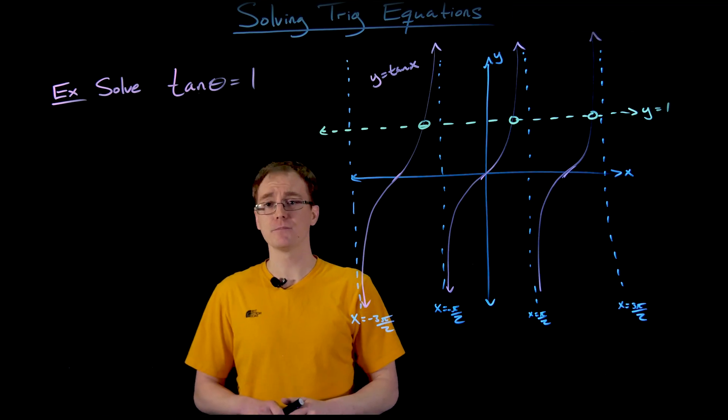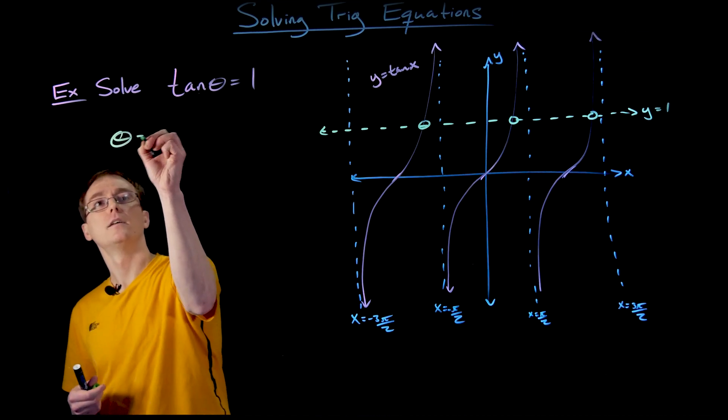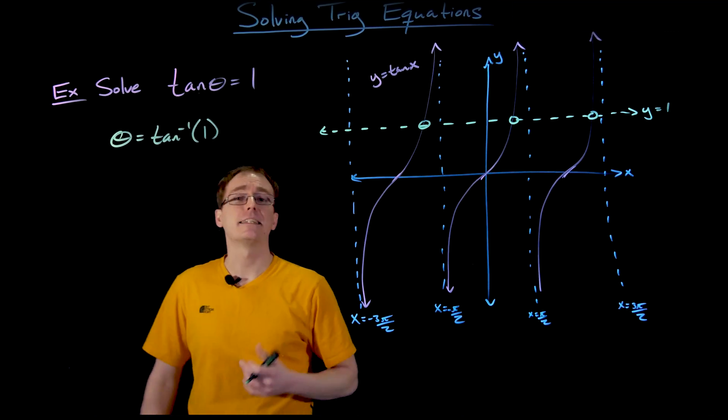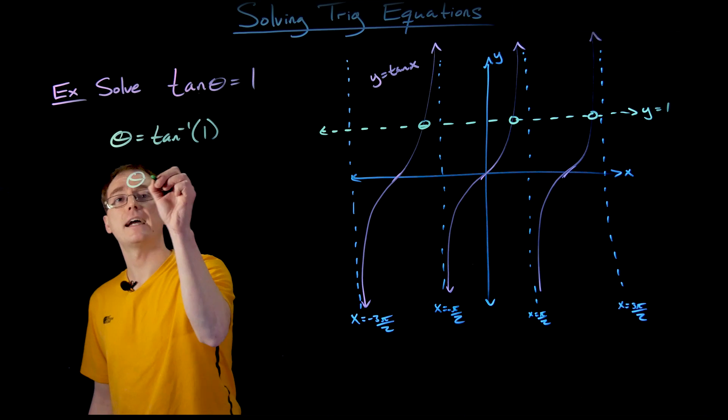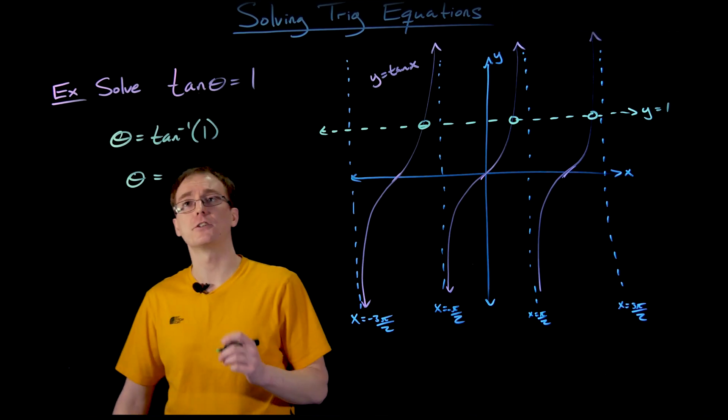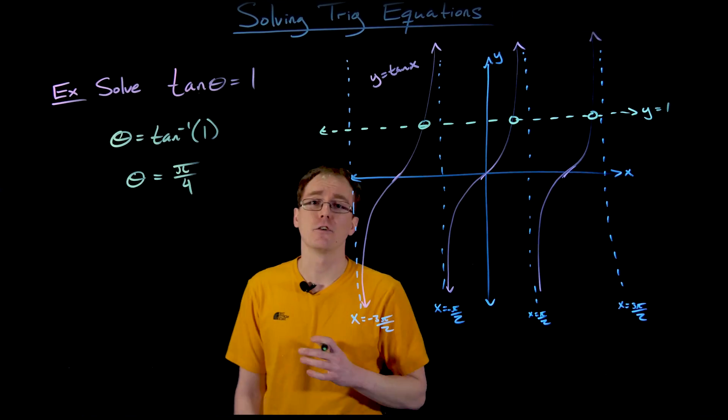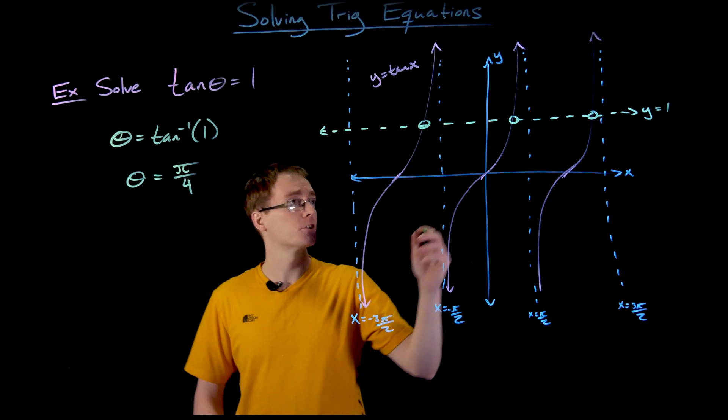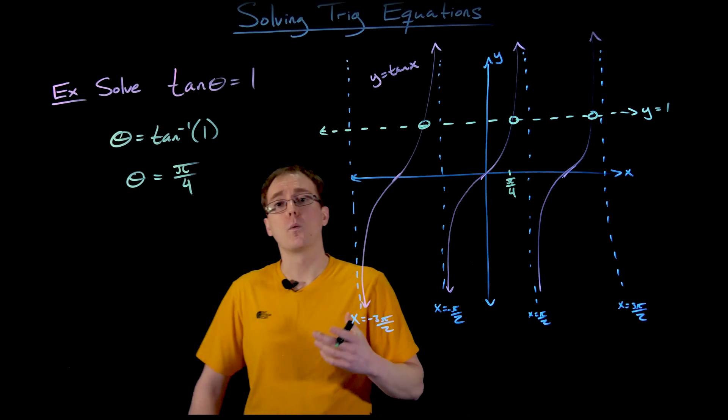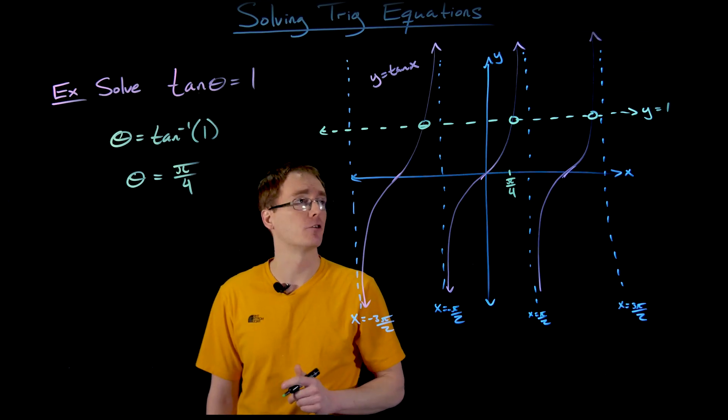We find the first solution by taking tangent inverse of both sides. For this equation, we take tangent inverse of 1. We might think back to the unit circle or use a calculator. Tangent inverse of 1 gives us π/4, so our first solution is when theta equals π/4.